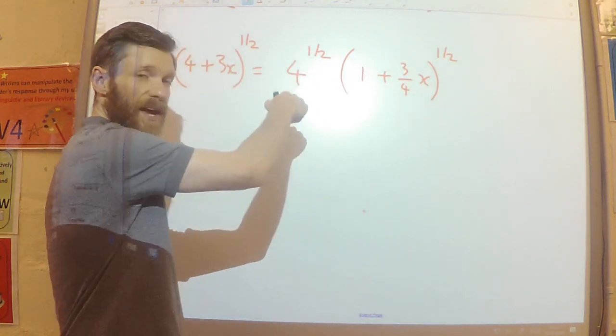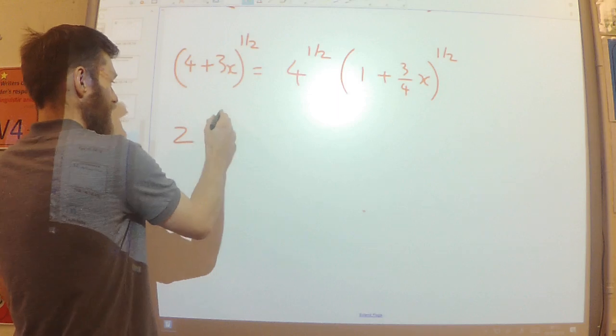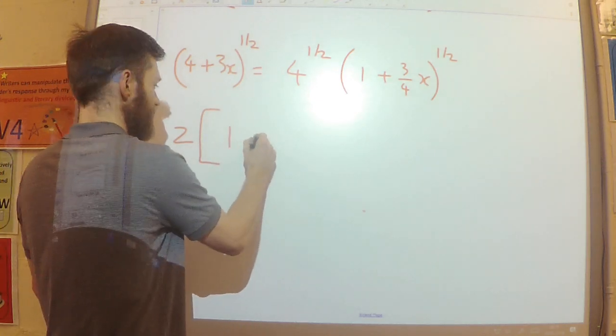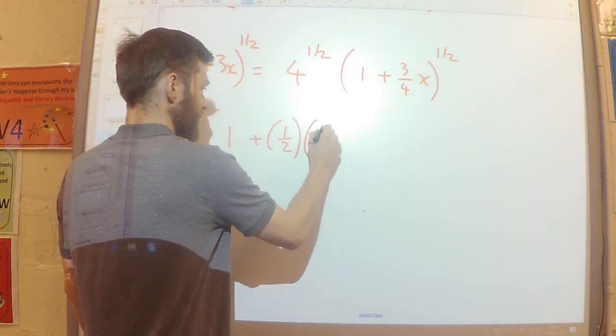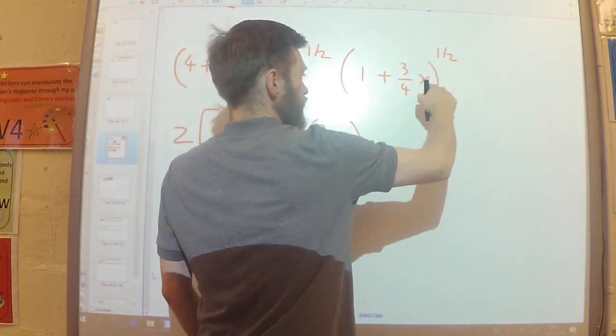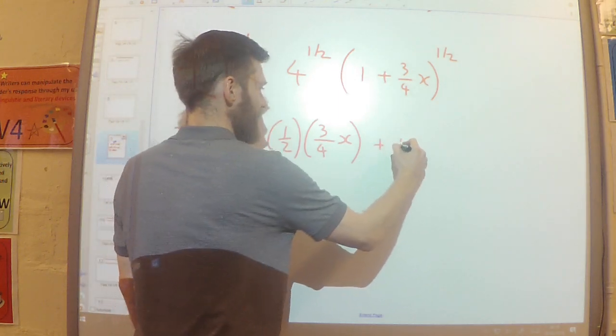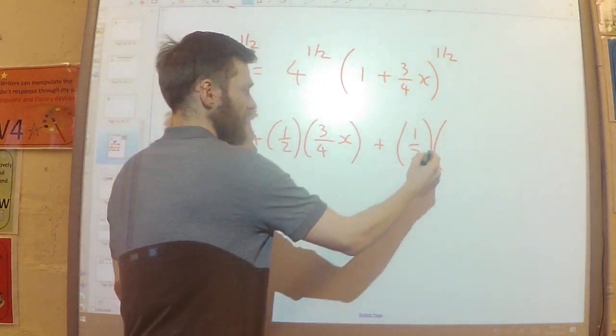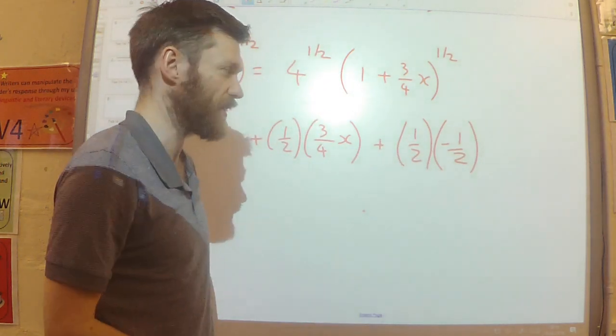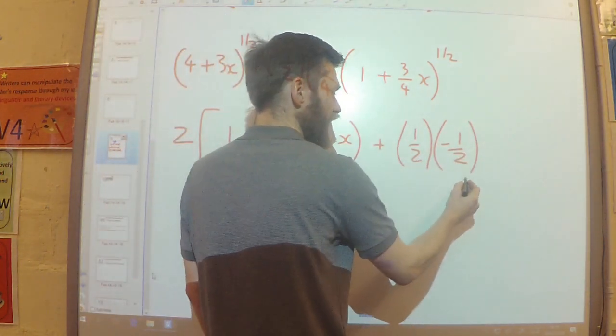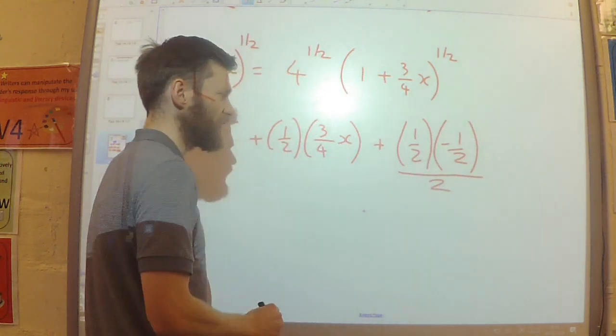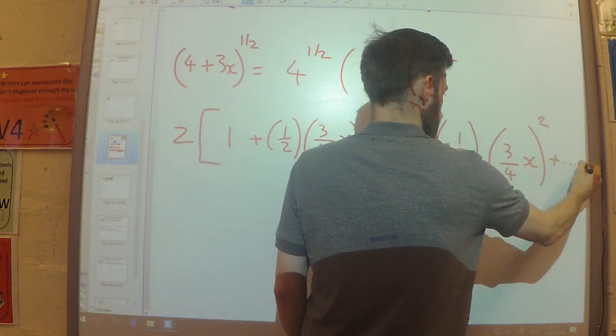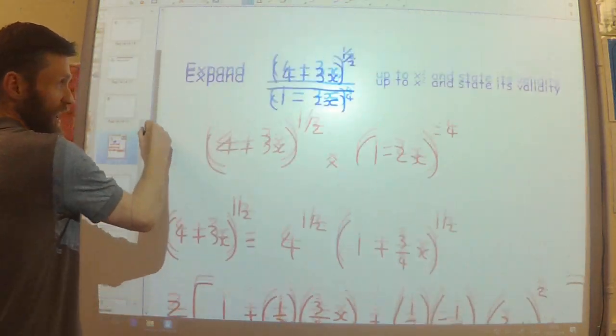Obviously, 4 to the power of 1 half is 2. So I will have 2 lots of, and now I can use the binomial expansion on this. So I will have 1 plus nx. So there's my n, there's my x. 1 plus n, multiplied by n minus 1. 1 half take away 1 is minus 1 half. So n multiplied by n minus 1, divided by 2 factorial, multiplied by 3 quarters x all squared. And that will take me, I only need to go up to the x squared term.